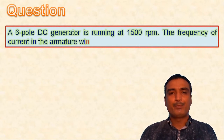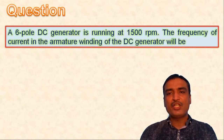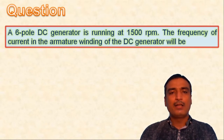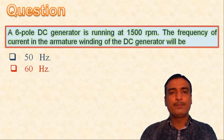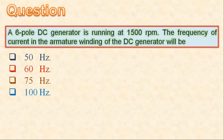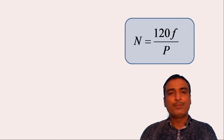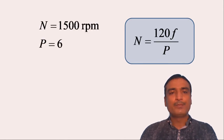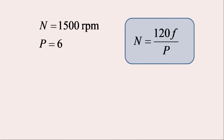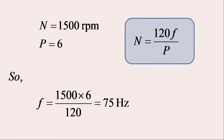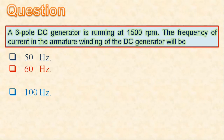Next question: a 6-pole DC generator is running at 1500 rpm. The frequency of current in the armature winding will be — 50 Hz, 60 Hz, 75 Hz, or 100 Hz. The current in the armature winding is alternating in nature. Using the equation N = 120f / P, with N = 1500 rpm and P = 6, the frequency is f = (1500 × 6) / 120 = 75 Hz. So the third option is correct.